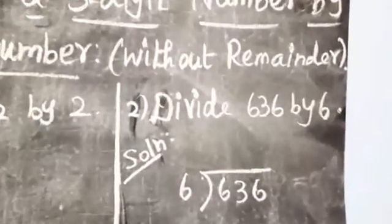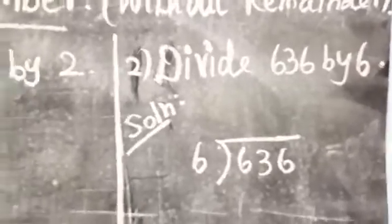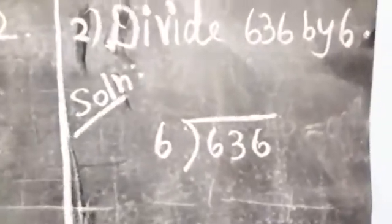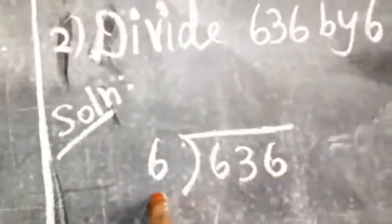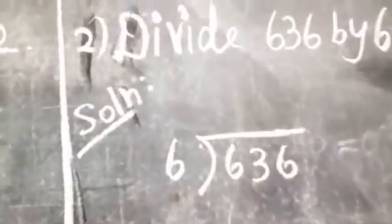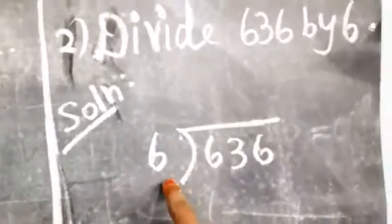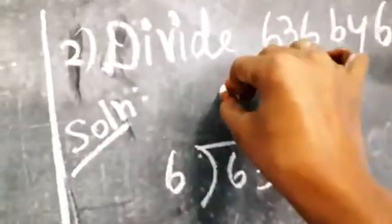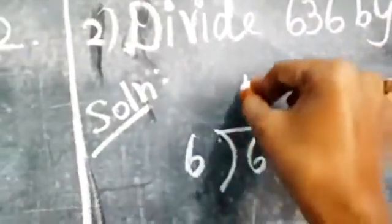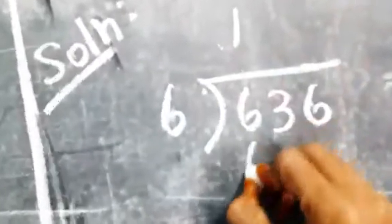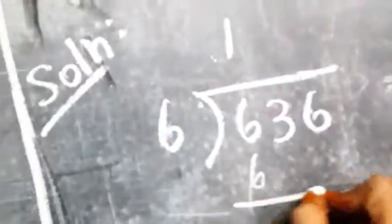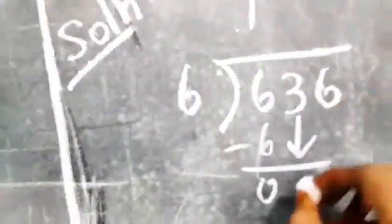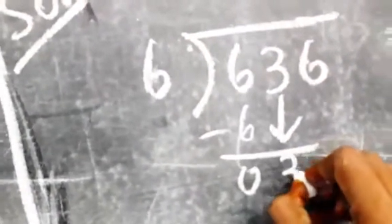Now look at another example: divide 636 by 6. Write the solution — write the dividend inside and the divisor outside. How many 6s are 6? 1 six is 6, so write 1 in the quotient. 1 six is 6, then subtract: 6 minus 6 is 0. Bring down the tens place — 3 is there, so bring down 3.